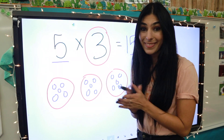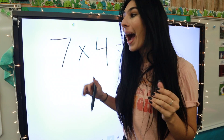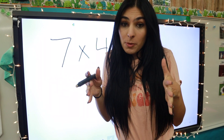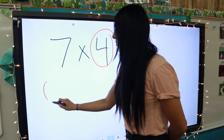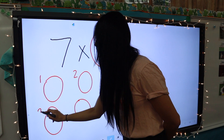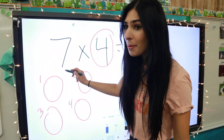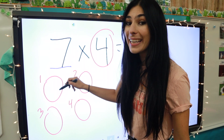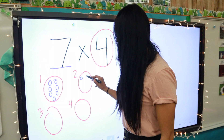Next equation: seven times four. I could do seven big groups, but I need to take up the least amount of space as possible, so we're going to do four groups - one, two, three, four. Since I have four groups, the other number tells me how many go inside each big circle.